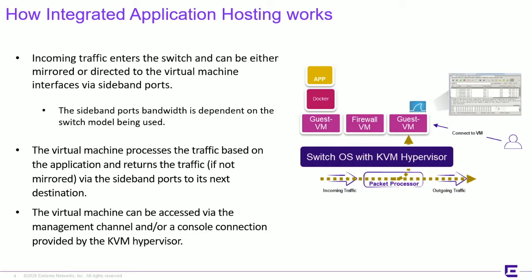The virtual machine processes the traffic based on the application and then returns the traffic — in the case of a firewall, or a Docker-type container. We can also do mirroring. A great example is on the far right-hand side where we see Wireshark as a guest VM, with the ability to mirror traffic to it so that we can monitor what's going on. The virtual machine can be accessed via the management channel or a console connection provided by the KVM hypervisor.